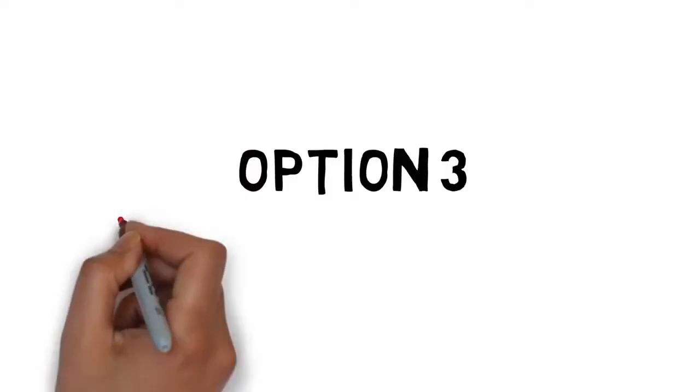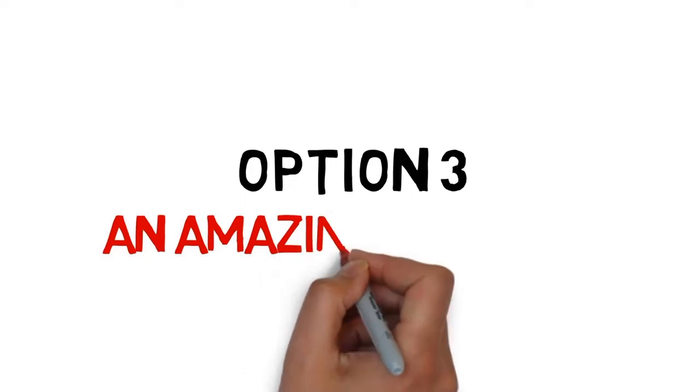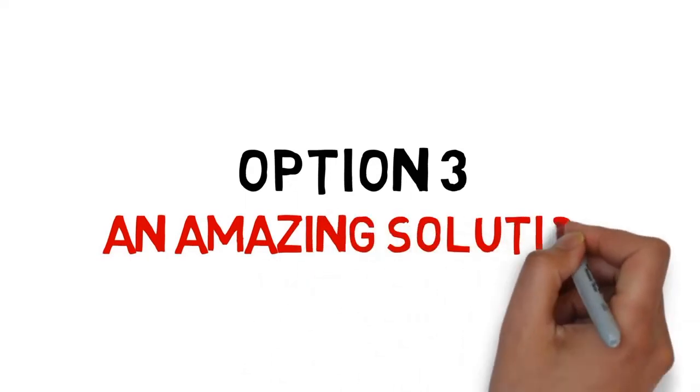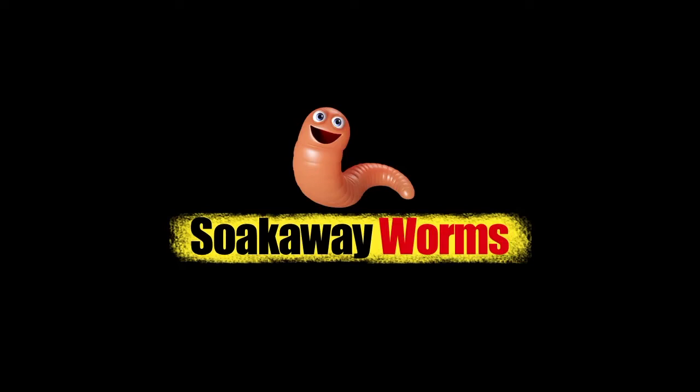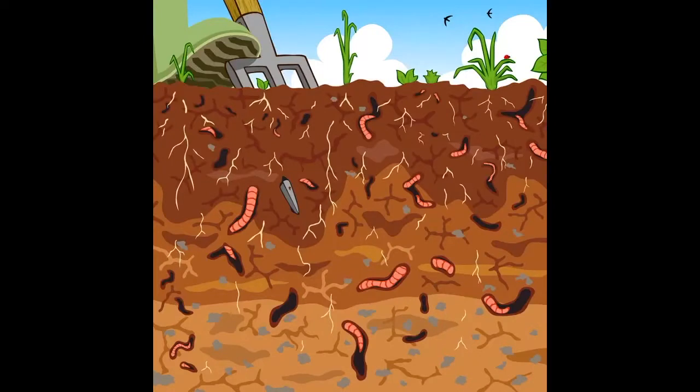Option three is an amazing solution that will fix all your septic tank and soak away problems. Soak away worms are an incredible safe, clean, natural and organic solution. Worms have been around for thousands of years, breaking down and converting waste into safe, clean, organic matter.